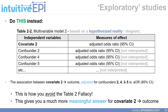Similarly, you would look at covariate 2 in a separate multivariable model, Table 2-2, adjusted for a different set of confounders — in this case, confounders 2, 4, and 5 — giving a more meaningful answer for the covariate 2 outcome relationship. Table 2-3 is multivariable model 3 examining covariate 3. And lastly, Table 2-4, multivariable model 4, is based on the hypothesized reality showing the potential link between the fourth covariate and the outcome, adjusted for confounders 4, 7, and 8.